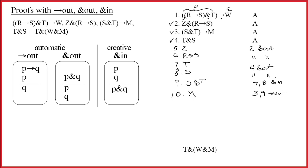It says if I have R arrow S and T on another line by itself, then I can write W. Do I have R arrow S and T? Well, notice that it's a combination of R arrow S and T. And yes, there's the R arrow S right there. And there's the T right below it.